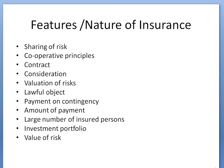The last feature is value of risk. We can measure the risk and put a premium based on that risk. In life insurance, we consider the possibility of death to determine the premium amount. In property insurance, if the possibility of damage to a building is higher, the premium is higher. Risk factors are considered in determining the premium. These are the features of the nature of insurance.